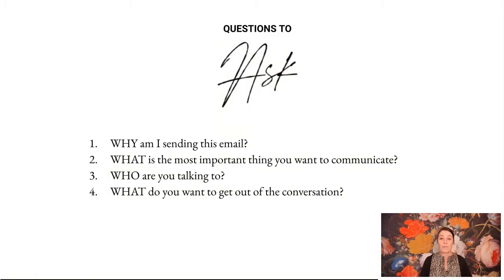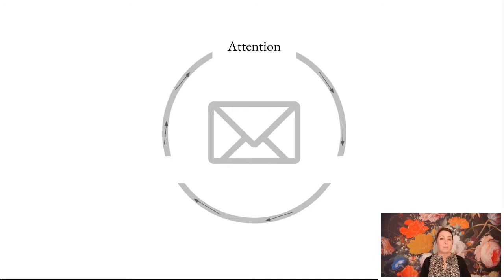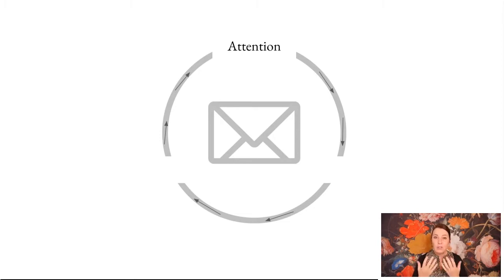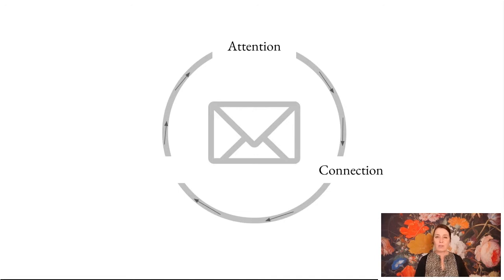Questions to ask: you need to know why you're sending your emails — what is it you want to communicate? That will decide who you're going to be sending to. Who are these people that should be receiving your email? It all starts by getting attention. You can use your social channels, your website, organic search — all kinds of ways to get attention. People need to know about you before they can get onto your list. They must encounter your art, encounter you.